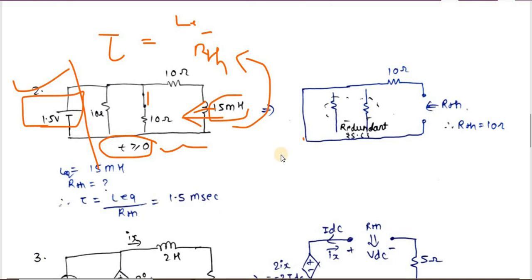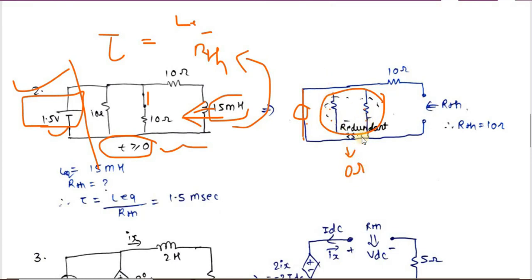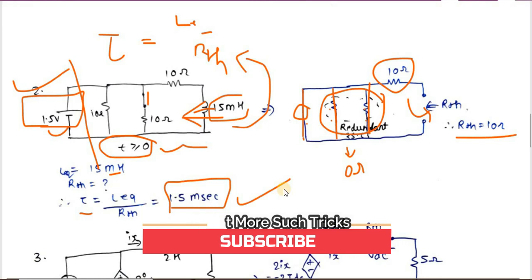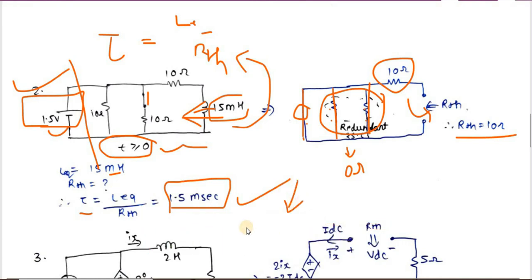For an independent current source, the internal resistance is infinite, so you open-circuit it. Here we short-circuit the voltage source. The two resistances in parallel with the short-circuit branch become redundant — their parallel combination is 0 Ω — so only the 10 Ω remains, giving Rth = 10 Ω. Therefore τ = L_equivalent / Rth = 15 mH / 10 Ω = 1.5 ms.